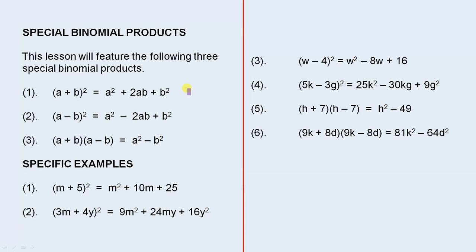Let's look at how it works. If you have (m + 5)², it's the first term squared, so that's m². Then you multiply them together to give you 5m and then you double that. That gives you 10m. And then you square the second term.